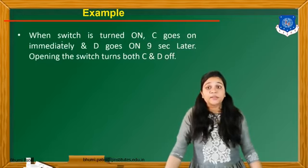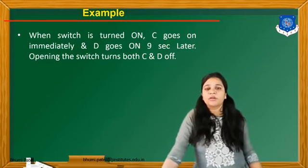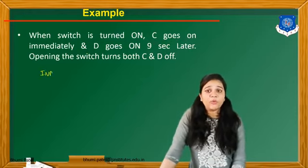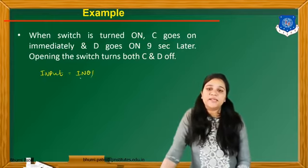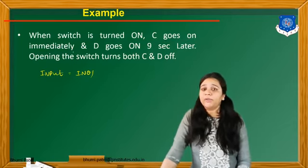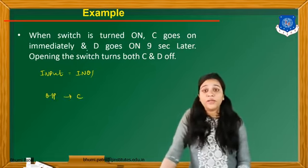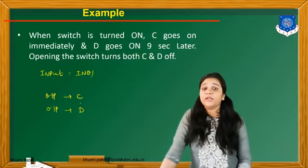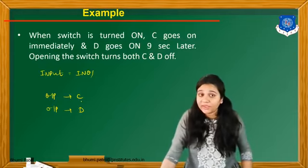The next example: when a switch is turned on, C goes on immediately and D goes on 9 seconds later. Opening the switch turns both C and D off. So first of all we write down how many inputs and outputs there are. We take one input switch, named IN01. C goes on immediately — so our first output is C. D goes on 9 seconds later — so our second output is D. For D we use the timer on delay with a preset value of 9 seconds.